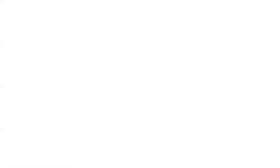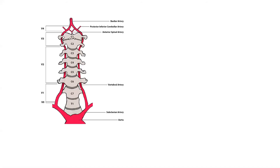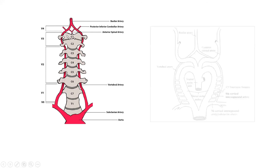We will now see the development of the vertebral artery. In the adult, the vertebral artery has four parts. The first part of the vertebral artery will be developed from the 7th cervical intersegmental artery — specifically, from its dorsal ramus.